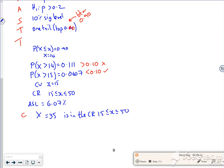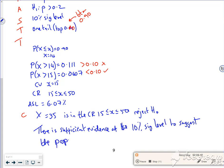So in terms of conclusion, my X equals 35 is in the critical region which is 15 less than or equal to X less than or equal to 50, so I reject H0. There is sufficient evidence at the 10% significance level to suggest the proportion has increased.